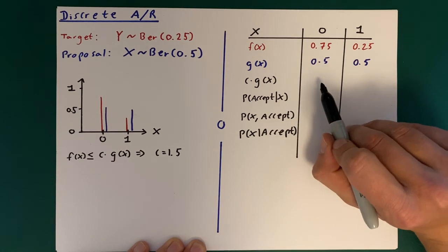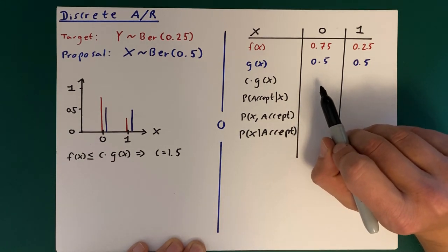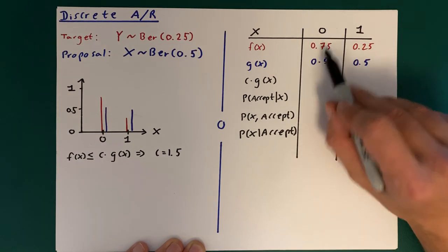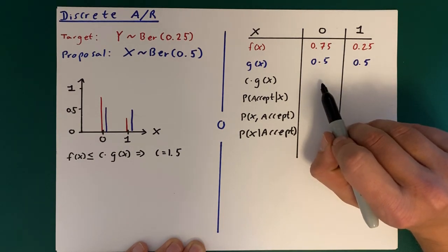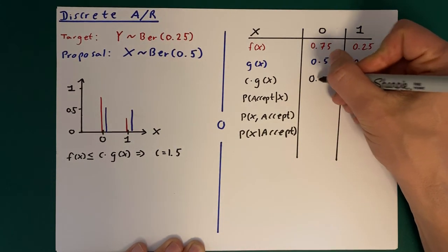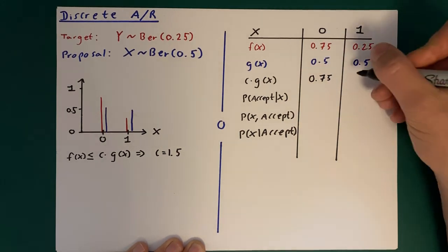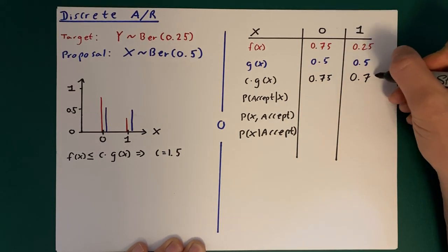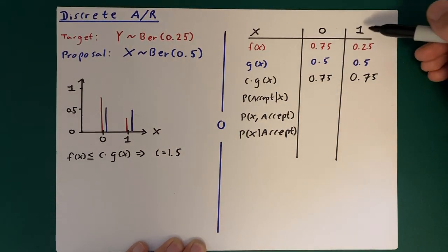For the envelope c times g(x), we had a c of 1.5 and a g(x) which was 0.5, so we get 0.75 and again 0.75 for the outcomes 0 and 1.